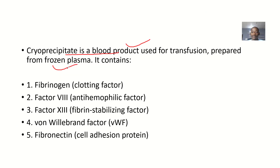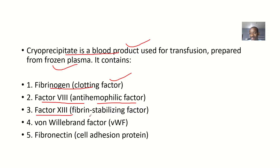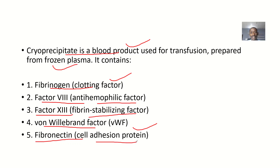Cryoprecipitate contains fibrinogen, which is a clotting factor. It also contains Factor VIII, which is the anti-hemophilic factor, and Factor XIII, which is the fibrin-stabilizing factor. Von Willebrand factor can also be found in cryoprecipitate, as well as fibronectin, also known as cell adhesion protein.